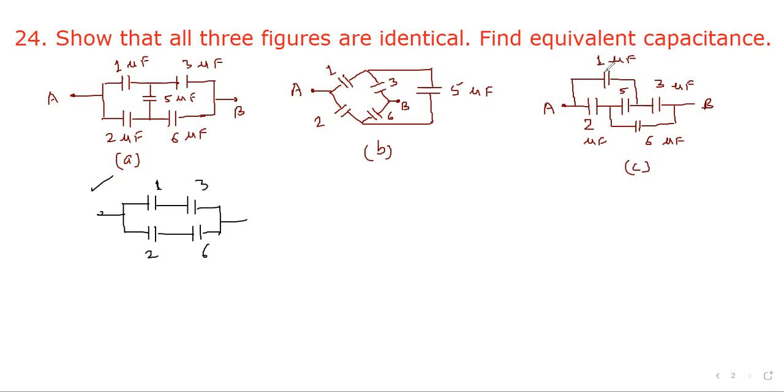In this case also, 1 upon 2 equal to 3 upon 6. So this 5 microfarad capacitor will be eliminated and we will get the same circuit.